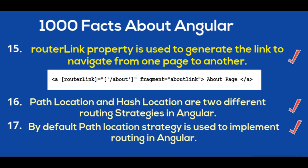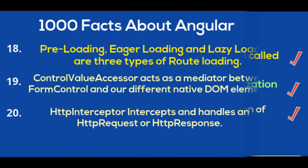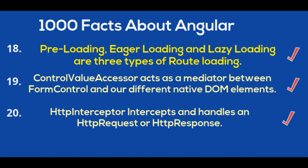PathLocation and HashLocation are two different routing strategies in Angular. By default, PathLocation strategy is used to implement routing in Angular. Pre-loading, eager loading, and lazy loading are three types of route loading.